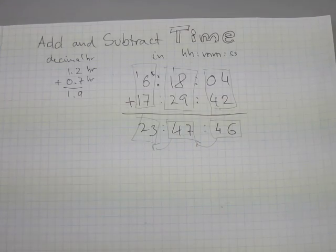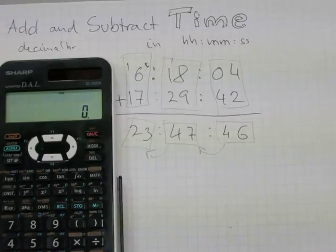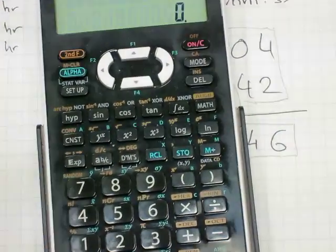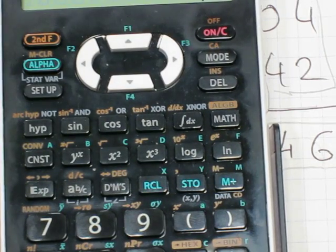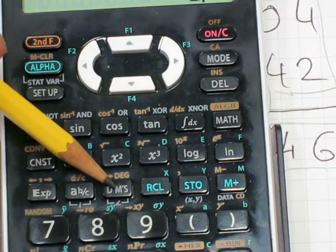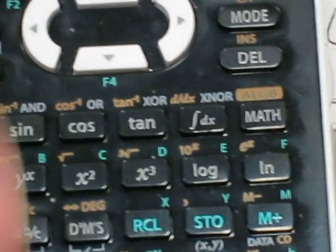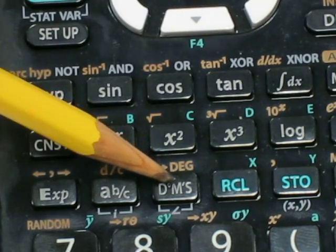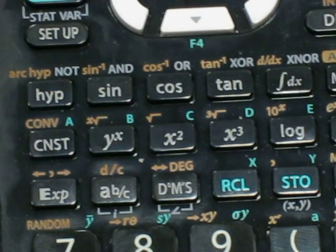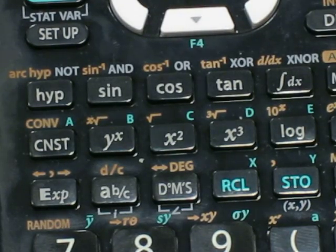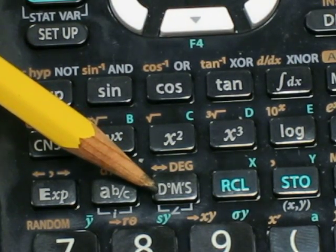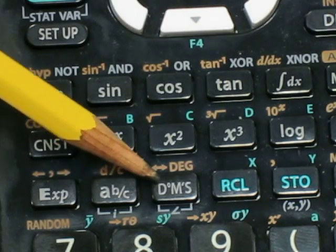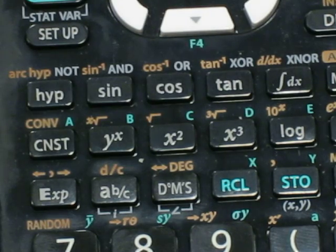I'll show you how this works on a calculator. If you have a scientific calculator like this, it has a degrees-minutes-seconds (DMS) button. This button relates to circles and degrees, but it will also work for adding time, as long as you keep in mind that if you have more than 24 hours you can trade it up for a day, whereas with degrees you just keep adding past 360.